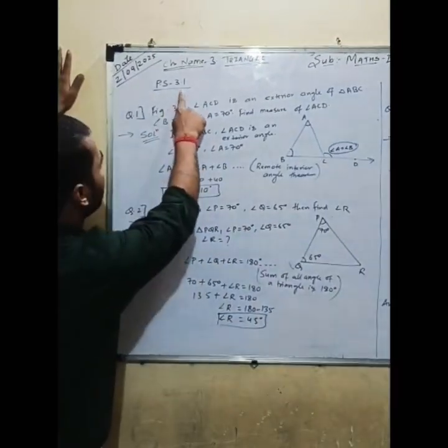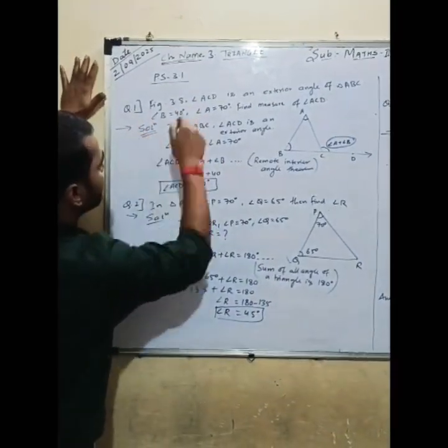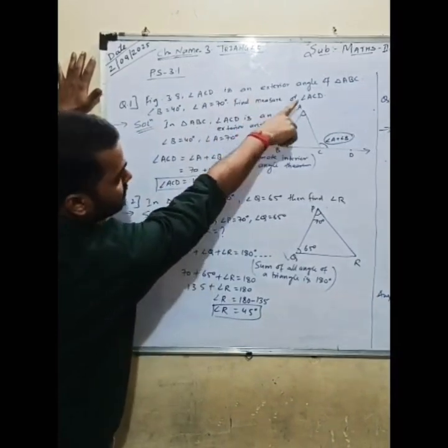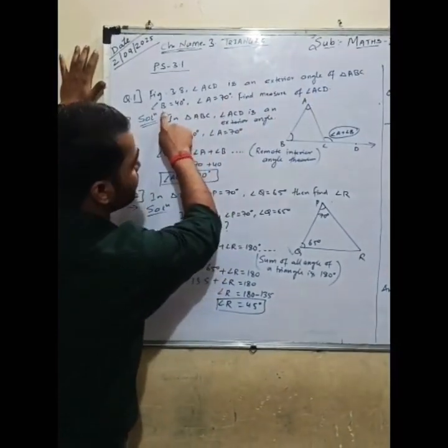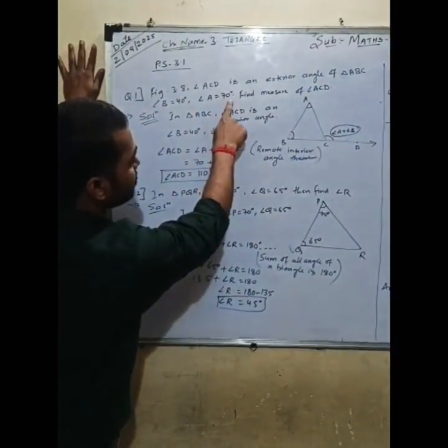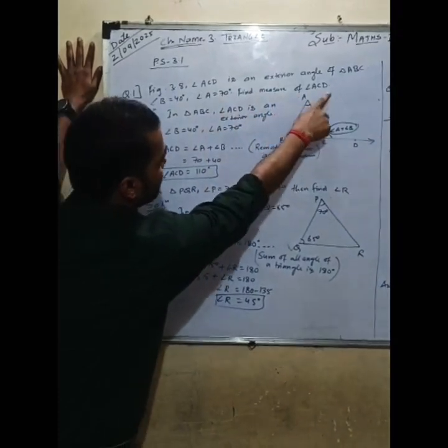Now let's look at practice set number 3.1. Figure 3.8: Angle ACD is an exterior angle of triangle ABC. Angle B is equal to 40 degrees, Angle A is equal to 70 degrees. Find the measure of angle ACD.